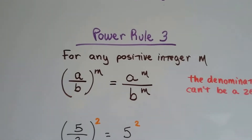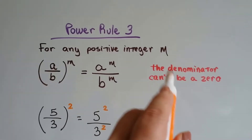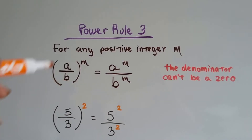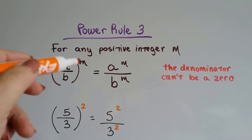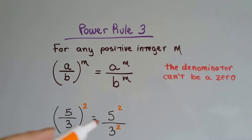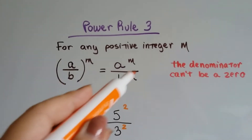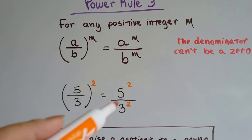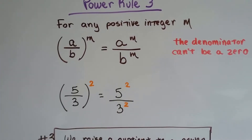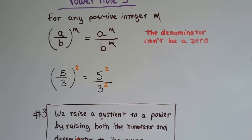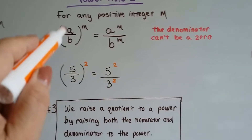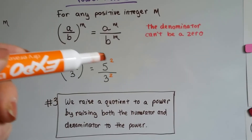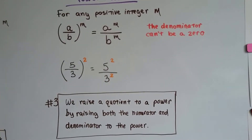Here's the 3rd one. For any positive integer m, as long as the denominator isn't 0, we could have a over b in parentheses — so this whole thing is the base — and it's being raised to the m power. That gives us a to the m over b to the m. If we use real numbers and had 5 over 3 in parentheses to the 2nd power, it would be 5 to the 2nd power over 3 to the 2nd power. So we can raise a quotient to a power — because fractions are just little division problems — by raising both the numerator and denominator to that power.